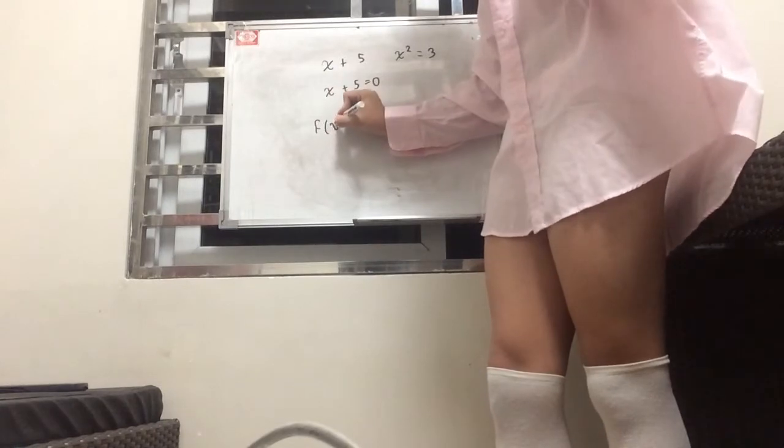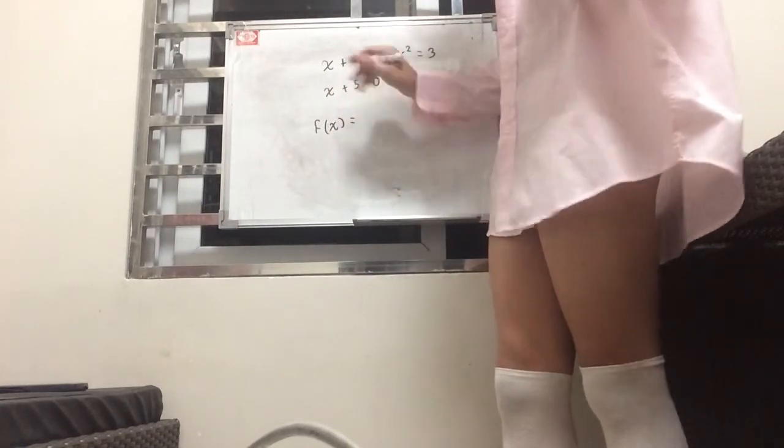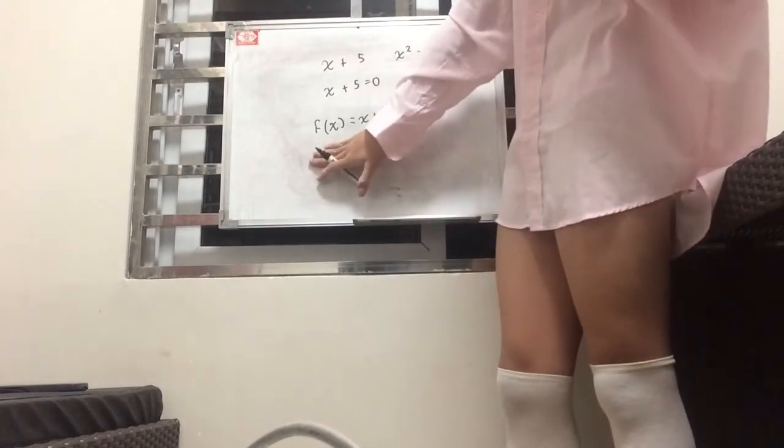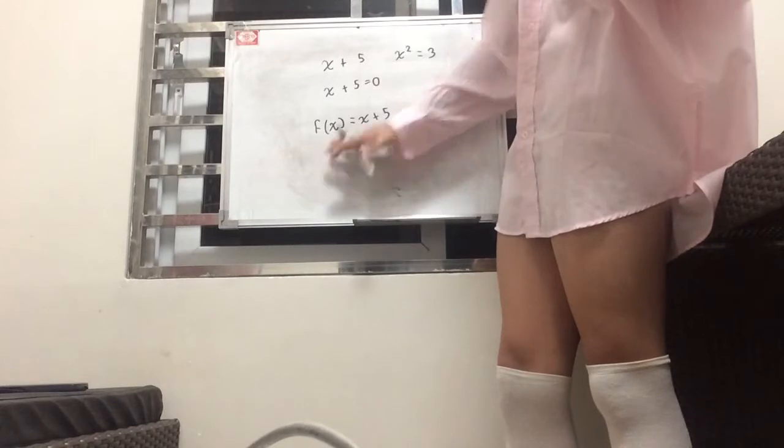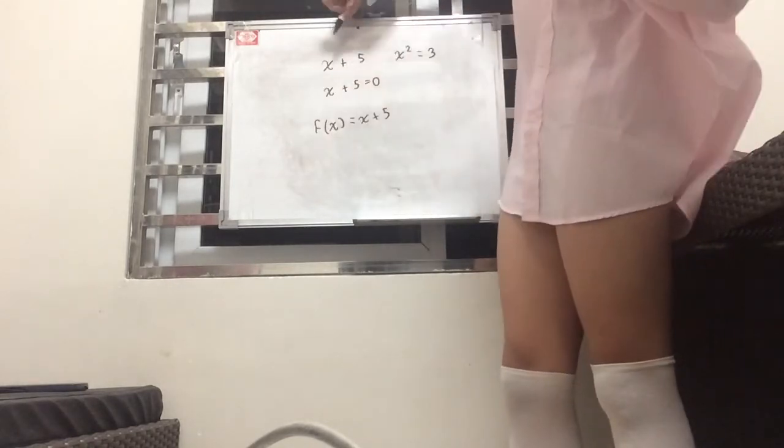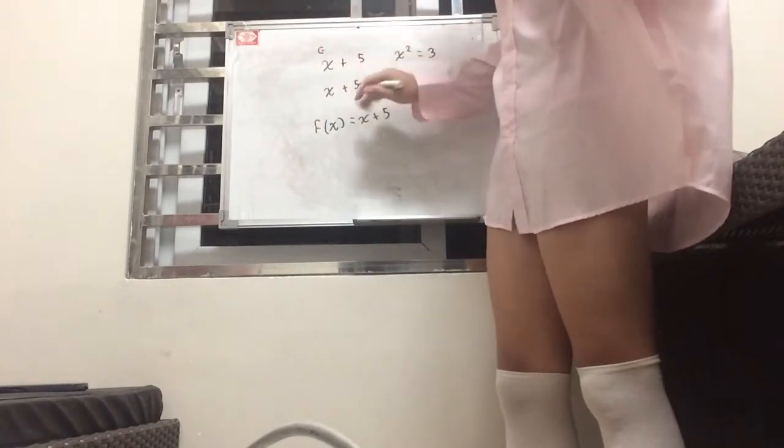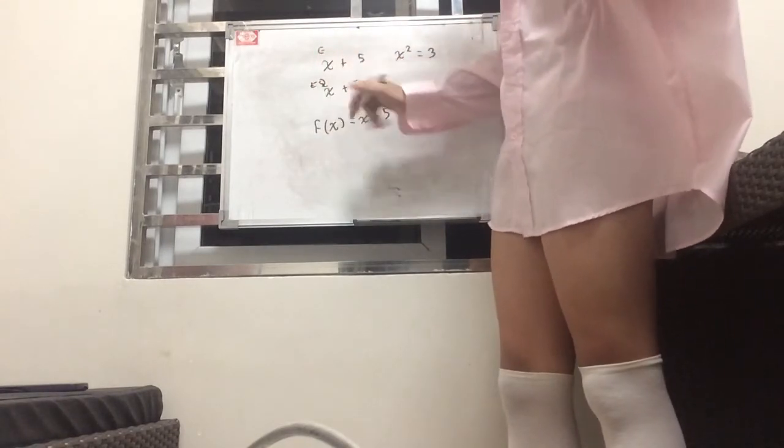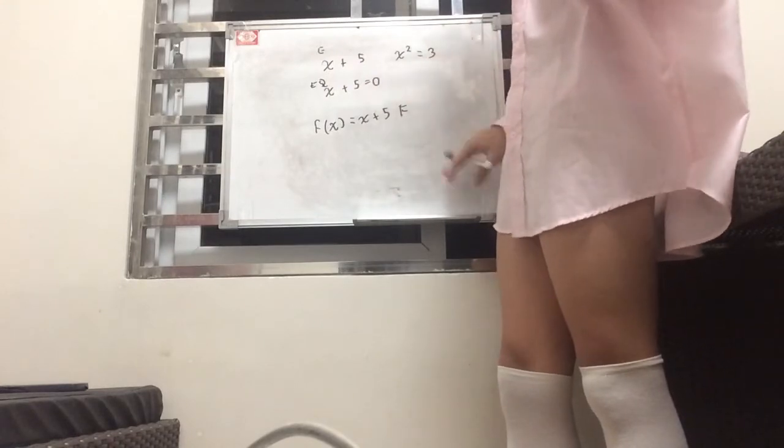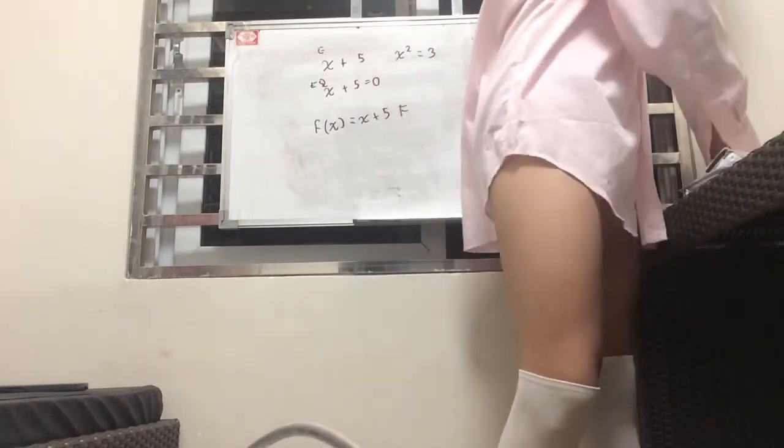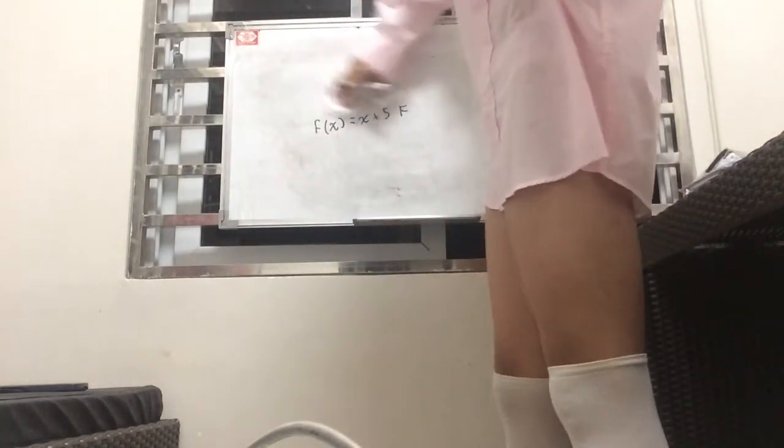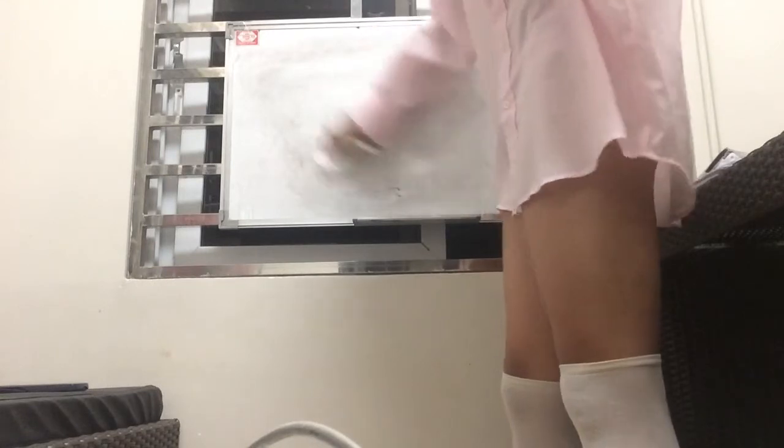Now, about functions, a function is something that takes a number and spits out an output. So it's something denoted by f of x. And let's use the same example, x plus five. Now, if you see something like this, like an f of x, this is a function. So this over here on top is an expression. This over here is an equation. And this over here is a function.